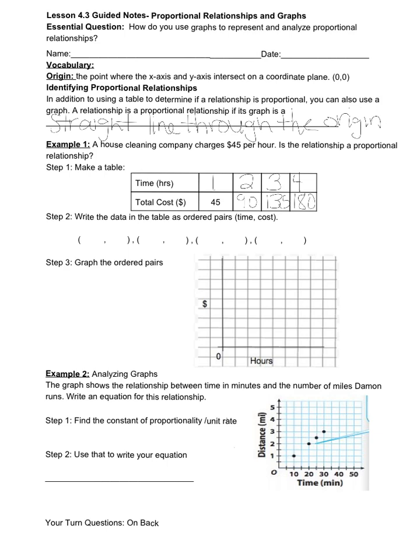Now how do I take this information from a table and put it into a graph? Well, I have to take this information and write that as ordered pairs so I know how to graph them. I'm going to use my information for hours, or time, as my x-value and the total cost as my y-value. So as an ordered pair, my first one is (1, 45). My second is (2, 90), (3, 135), and (4, 180).